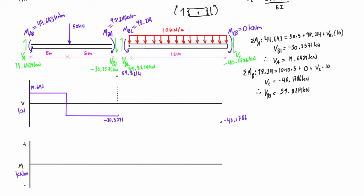Here we're getting another jump due to the roller reaction at B. Going left to right, a point load pressing down makes you jump down, so jumping up here means that the roller force is oriented upwards. Where we have a constant distributed load, the shear force drops linearly. The total magnitude of the drop equals the total force: 10 kilonewtons per meter times 10 meters is a total drop of 100 kilonewtons. And 59.8214 minus 100 brings us down to negative 40.1786, so there we go — that is our shear force diagram.